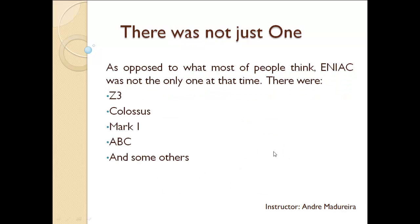There was not just one computer at that time — ENIAC was only one of them. There was the Z3, the Colossus, the Mark 1, the ABC, and several others. But ENIAC was by far the most notable because it was electronic — it was faster. Most of the others were electromechanical or less powerful. ENIAC was a very big milestone in history compared to these others, which is why you won't hear as much about them.